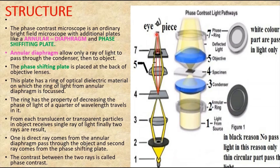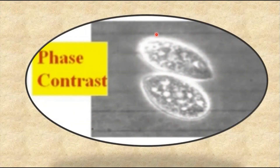Depending upon the phase shifting element used, the specimen may appear lighter against a dark background, or darker against a light background. This is the overall construction of the phase contrast microscope. Here you can see an image from the phase contrast microscope, where the background is darker and the object appears brighter.